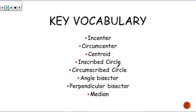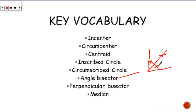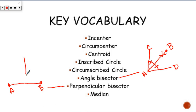An angle bisector looks like this: you have an angle in the middle and then a line that splits that angle in half. So if I have angle CDA, line segment AB is called an angle bisector — it splits the angle in half. A perpendicular bisector is when you have a line segment AB and another line segment CD that comes through it. CD is a perpendicular bisector: it splits AB in half, it goes through its midpoint, and it forms a 90-degree angle on both sides.